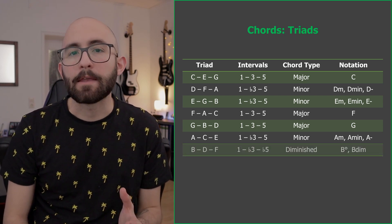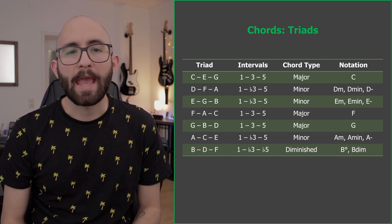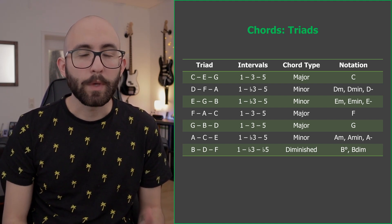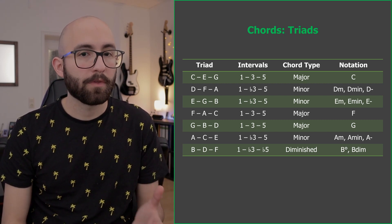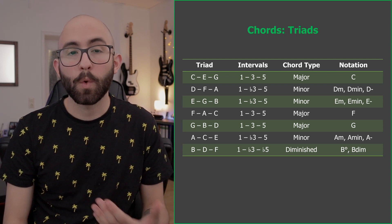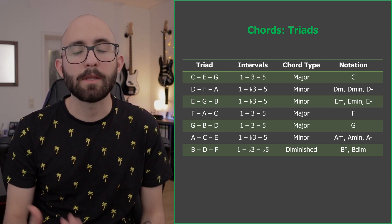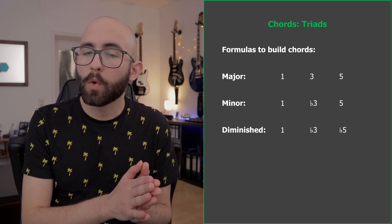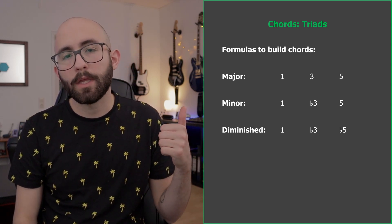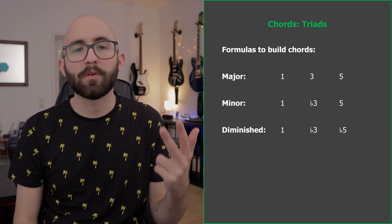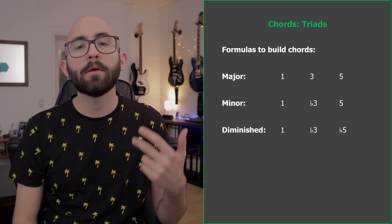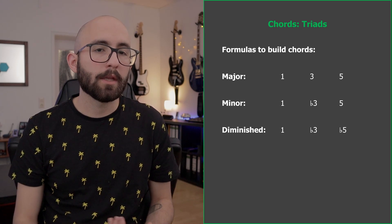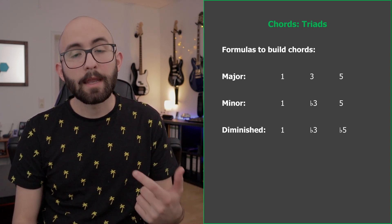Finally, we have B. Something very interesting happens here — we have the triad B, D, F. Between B and D we have a minor third, and between B and F a diminished fifth. This chord is known as a diminished chord, characterized by the minor third and the diminished fifth. To summarize, the formulas are: major chord — root, major third, perfect fifth; minor chord — root, minor third, perfect fifth; diminished chord — root, minor third, diminished fifth.